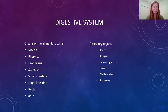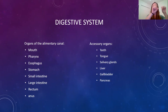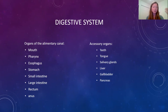Our digestive system is responsible for the intake and digestion of food, absorbing nutrients, and removing waste. Peristalsis is the name for the way in which our GI tract relaxes and contracts in a wave-like motion — this is involuntary — and that's how food moves along in the digestive tract. The organs of the digestive system can be divided into two categories: the alimentary canal and the accessory organs.